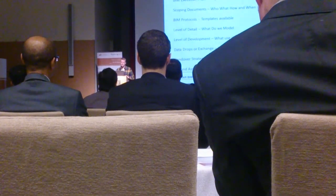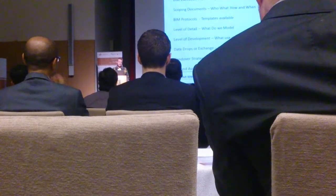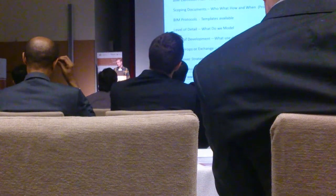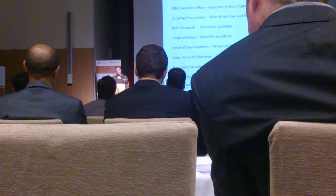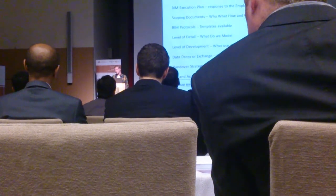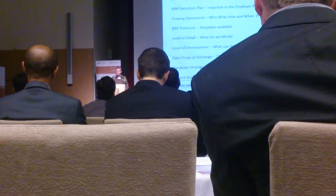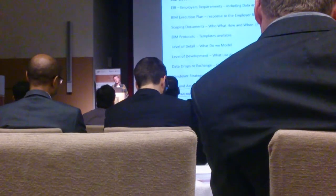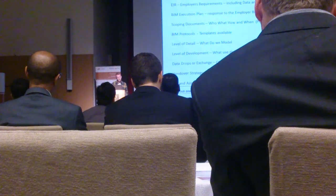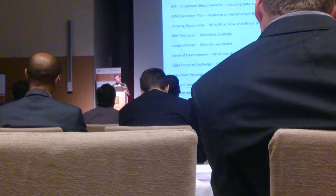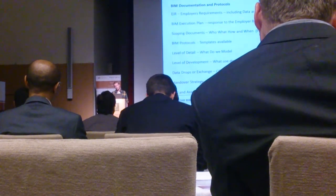The most important document for me is the Employer's Information Requirements — that's how we set up the data and the model exchange, and from an FM point of view that's really important. Then you've got the BIM Execution Plan, which is a response to the employer's requirement. Scoping documents are very important to drill into the detail — look at the level of detail, get into the works. Are you going to model everything? What's the level of detail in the models at each stage of the project?